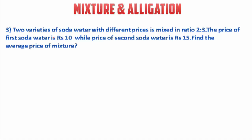Two varieties of soda water with different prices are mixed in ratio 2:3. The price of the first soda water is rupees 10 while the price of the second soda water is rupees 15. Find the average price of the mixture. In previous questions we were finding the ratio between two quantities, but in this case the ratio is given and we have to find the average price.